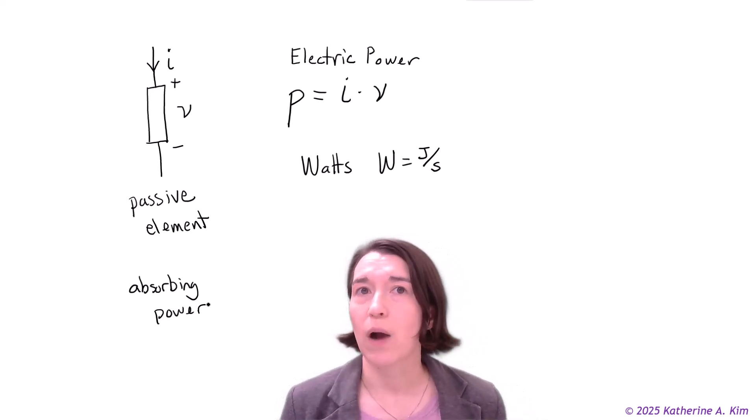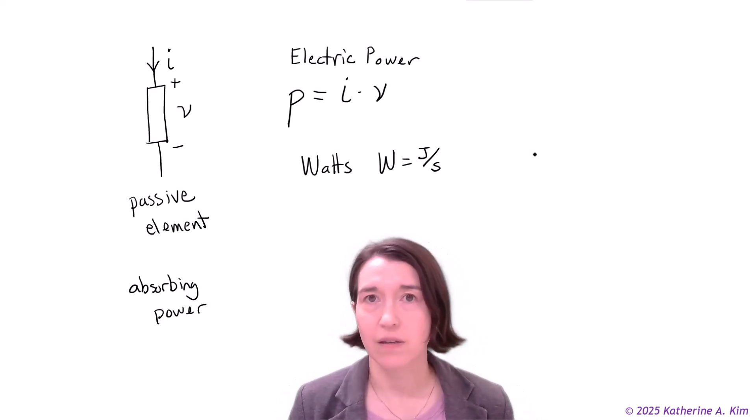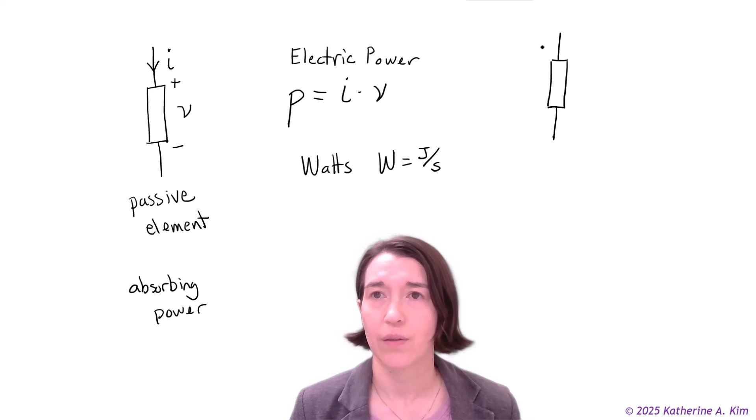We can also have power generated by a device or an element. So I'm just going to draw this again over here. We still have the positive and negative, defining v over it. But if we define the current out of the device, this would be an active device or element.